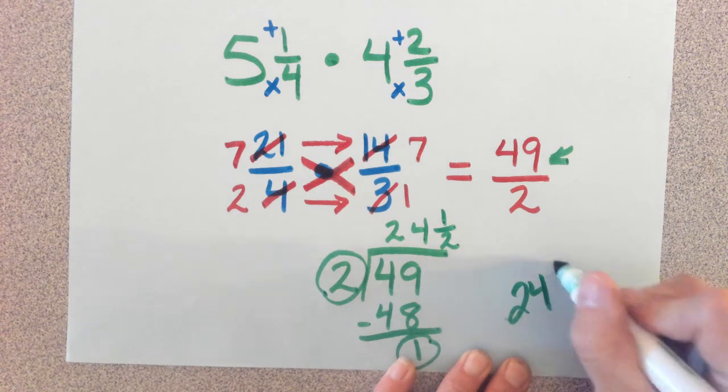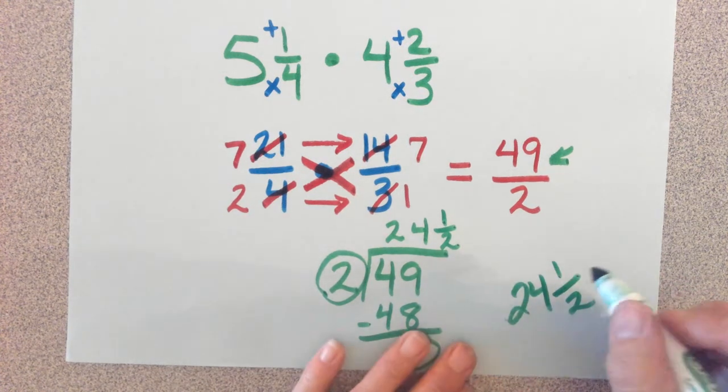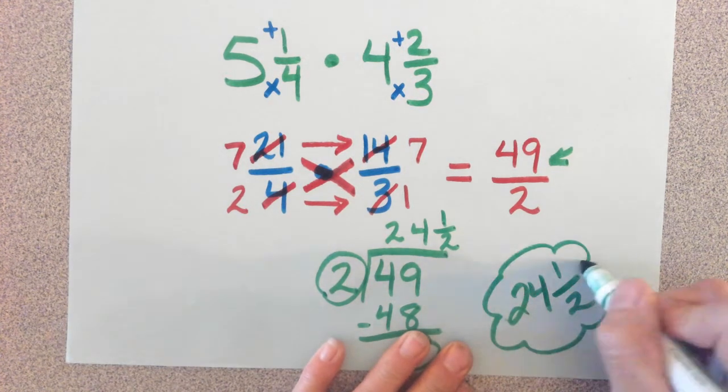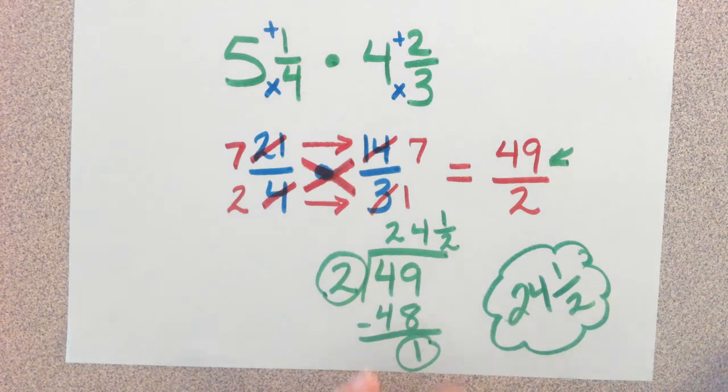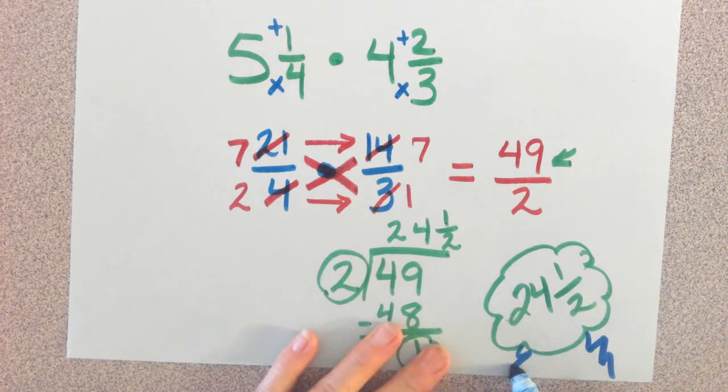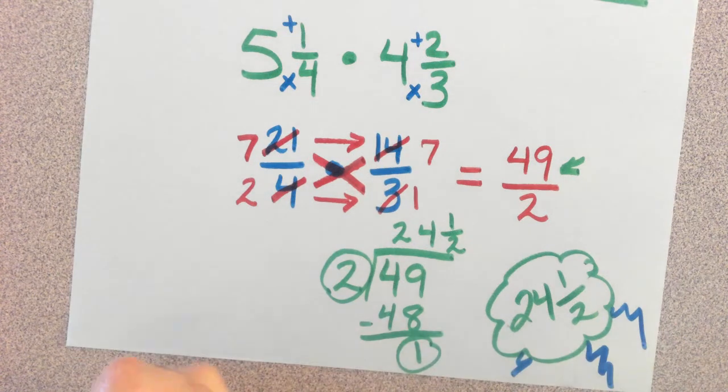Final answer, twenty-four and one-half. Put a little bubble around it, make it look girly. Put some lightning in it, make it look manly. Hope this helps. Have a great day. Bye.